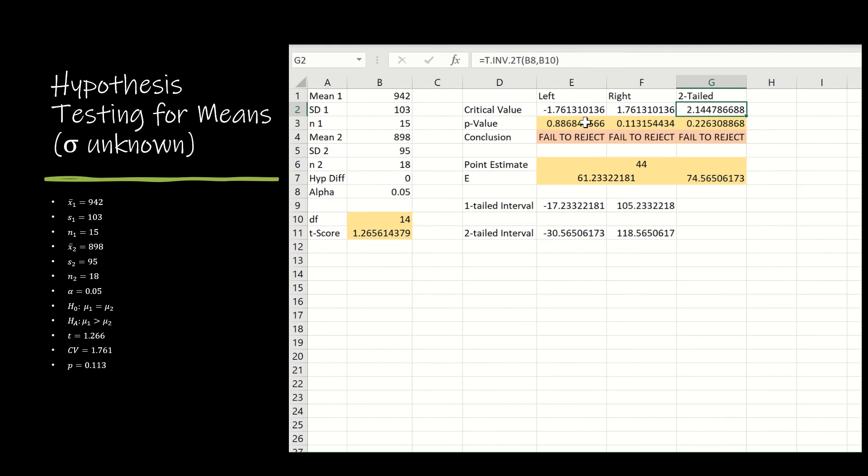For p-values, again, I'm using t-dist, and that would be the t-score, the degrees of freedom comma 1, t-dist right, or t-dist two-tail.